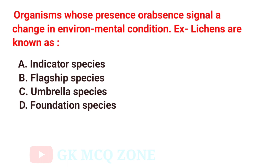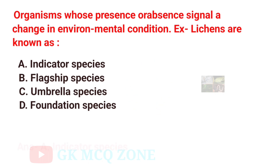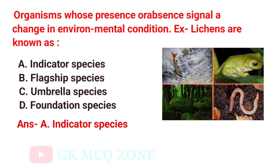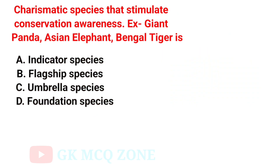Organisms whose presence or absence signals a change in environmental condition — for example, lichens — are known as what? The correct answer is Option A: Indicator Species.